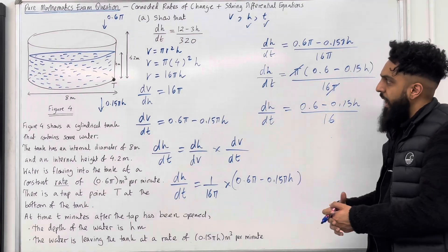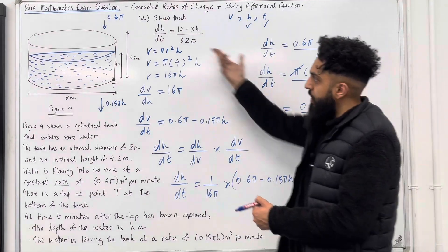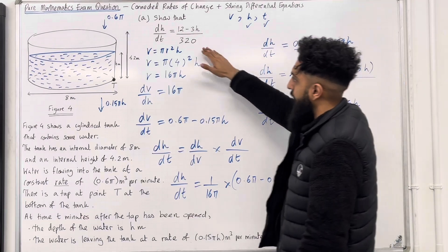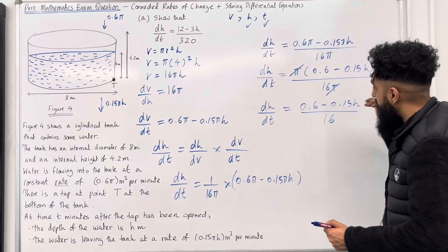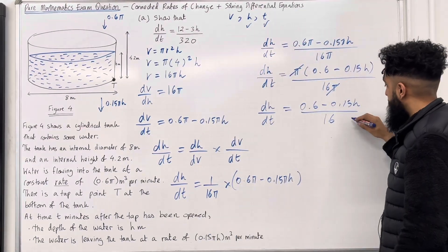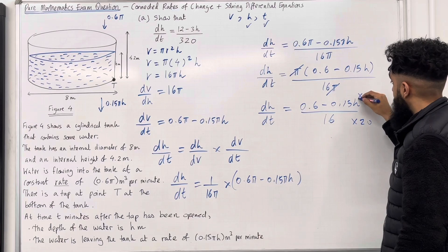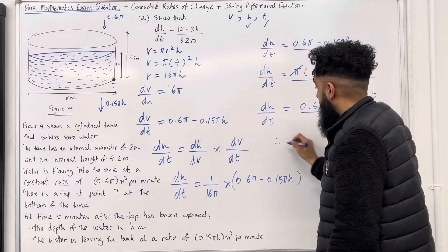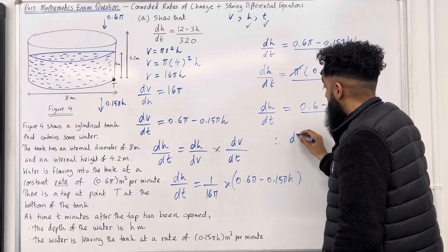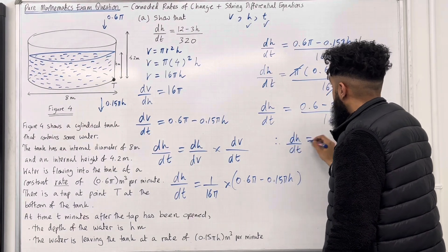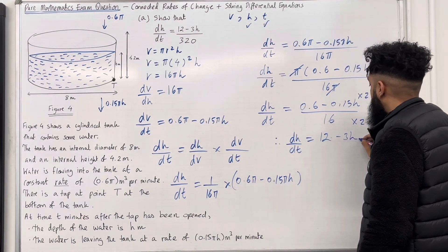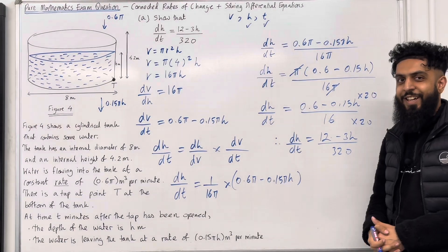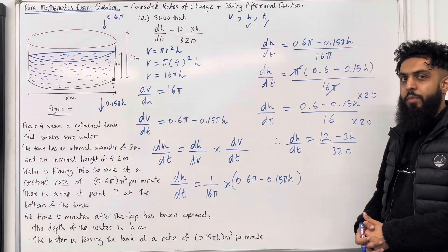In the target expression the denominator is 320. How do I go from 16 to 320? I multiply top and bottom by 20. Doing this gives, therefore, precisely dH/dt = (12 − 3H) / 320 as required. That completes Part A of this exam question.